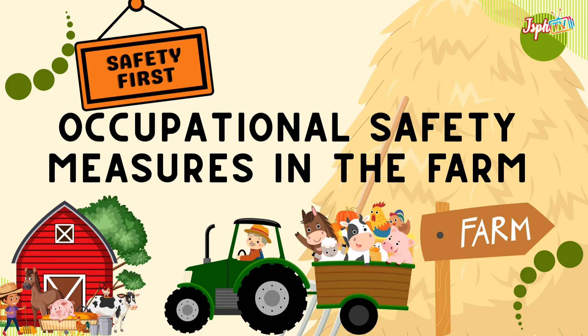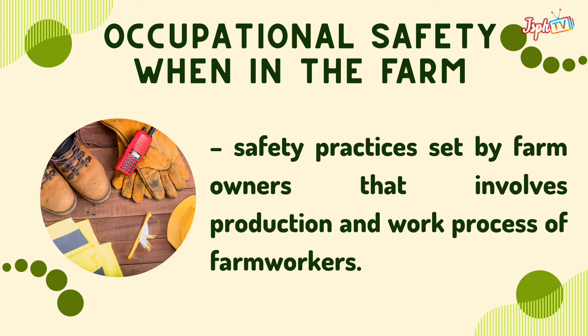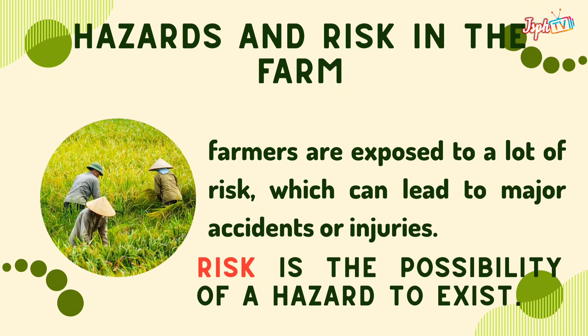For occupational safety measures in the farm, safety practices are set by the farm owners and involve the production and work processes of farm workers. Farmers are exposed to a lot of risks which can lead to major accidents or injuries. Risk is the possibility of a hazard to exist.